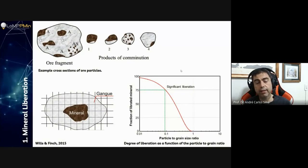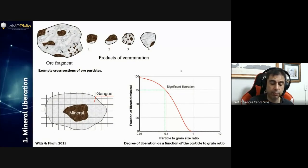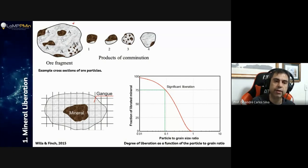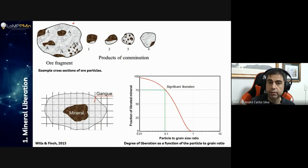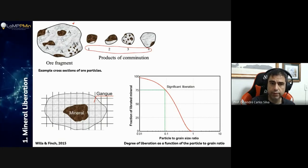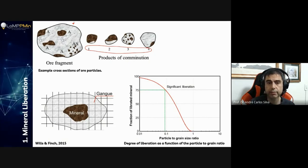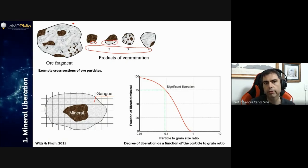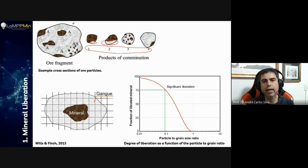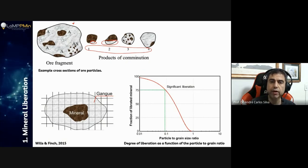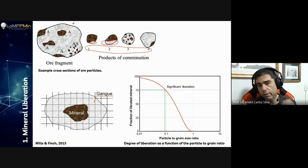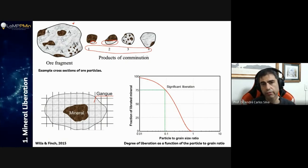The first thing to keep in mind is mineral liberation. Here we have an example from Barry Wills' book. Consider that this is our granite, and particles A are the ones we want to sell — the marketable particles. If I break this big particle, I get four other particles. The first has a lot of black material — our desired mineral — but still a small part of white material. The second has more white material. The third has a white matrix with our desired material inside. And the fourth is the opposite: just a small amount of the desired material surrounded mostly by gangue mineral.